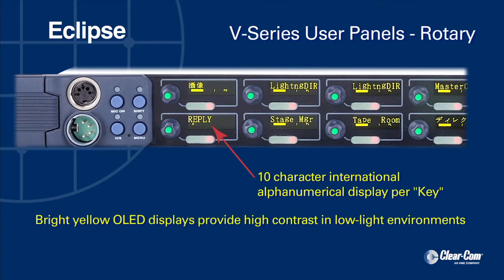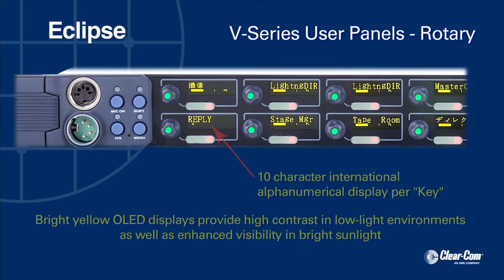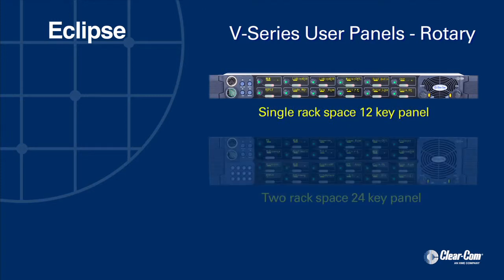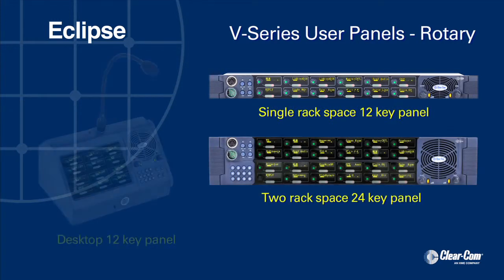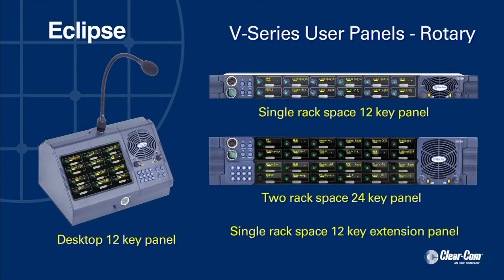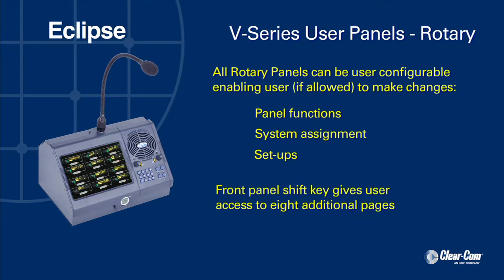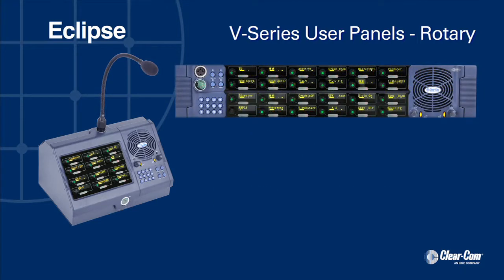These bright yellow OLED displays are designed to provide high contrast in low-light environments, as well as enhanced visibility in bright sunlight. Available in four basic configurations, including a single rack space 12 key, two rack space 24 key, desktop 12 key, and 12 key extension panel. Rotary control panels can be user configurable, enabling the user, if allowed, to make changes to panel functions, system assignments, and setups.